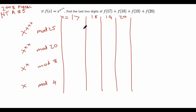You can first pause the video to try out the problem for yourself. So, we see that we have f(x) equals x to the x to the x to the x. And we want to find the last two digits of f(17) + f(18) + f(19) + f(20). The last two digits just means f(17) + f(18) + f(19) + f(20) mod 100.